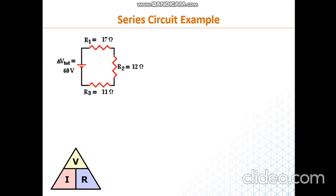Let us solve one example. I advise you to pause the video and try to find the answer yourself. We have three resistors R1, R2, and R3 connected in series, and the total voltage of the source is 60 volts. If we want the equivalent resistance for these three resistors, since they are in series we just add: 17 plus 12 plus 11, giving 40 ohms. The same current is flowing everywhere in this circuit.